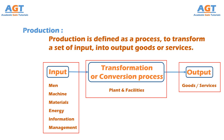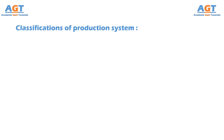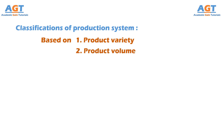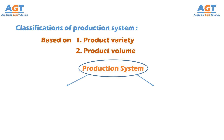Now, let's have a look at how many types production systems can be classified. Basically, production systems are classified on the basis of product variety, or output variety, and product volume, or output volume. Based on product variety and product volume, the production systems can be classified broadly into two types.